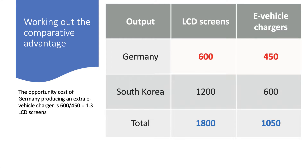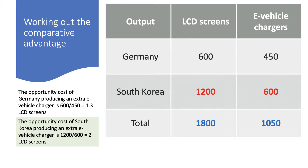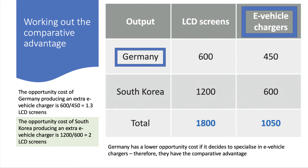Moving on to comparative advantage — the key to this is opportunity cost. For example, how many LCD screens does a country have to give up if they produce more vehicle chargers? For Germany, the ratio is 600 to 450, so if they produce an extra e-vehicle charger they have to give up 600 divided by 450, which equals 1.3 screens. Whereas for South Korea, if they focus on e-vehicle chargers they'd have to give up two screens per vehicle charger. So the opportunity cost is lower for Germany if it decides to specialize in vehicle chargers, and therefore Germany has the comparative advantage in e-vehicle chargers.